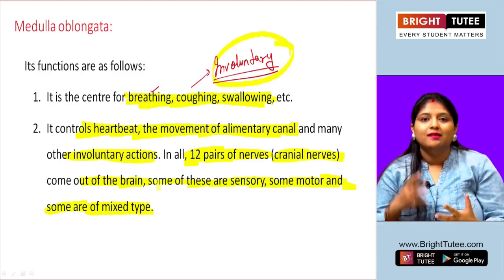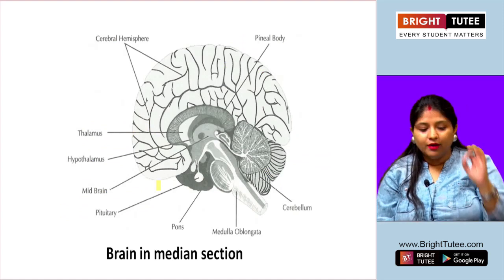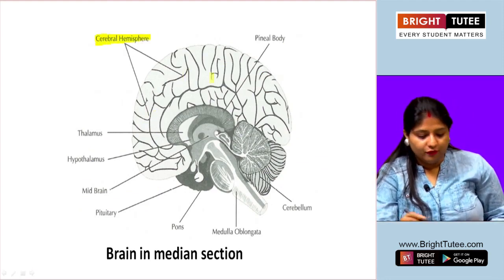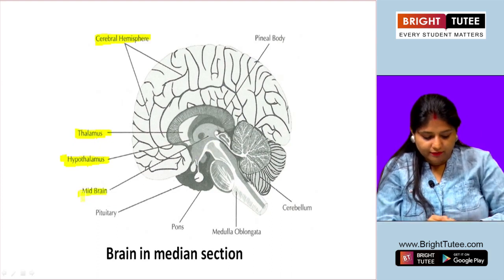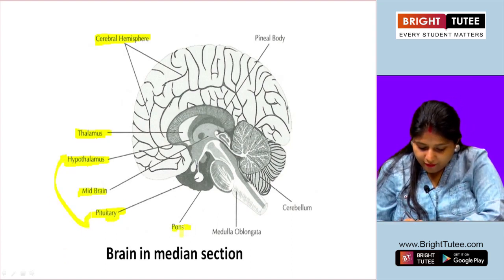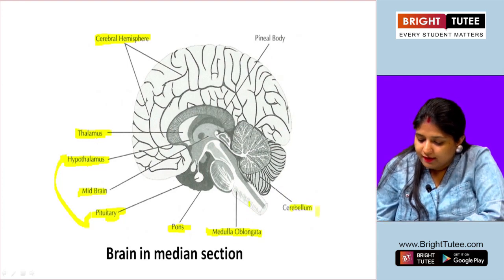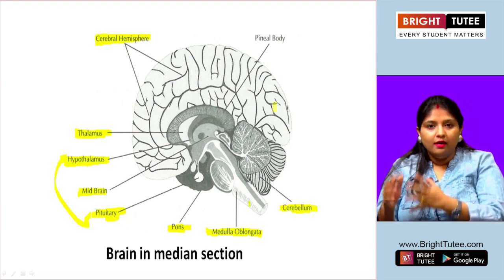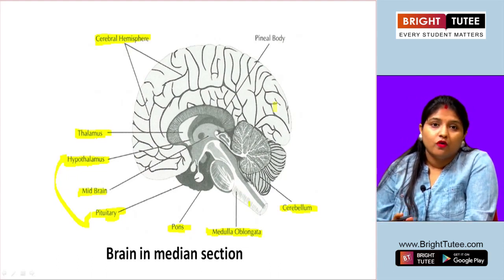Looking at the brain diagram: you have the cerebral hemispheres, then the thalamus and hypothalamus — both parts of the diencephalon. The midbrain connects the forebrain and hindbrain. The pituitary gland is connected to the hypothalamus. Then you have the pons — a center for respiration — the medulla oblongata, and finally the cerebellum. These are the important parts of the brain and their various locations. I hope you were able to understand the structure, function, and importance of the brain.